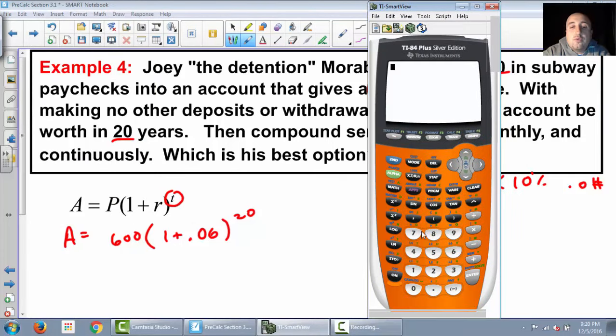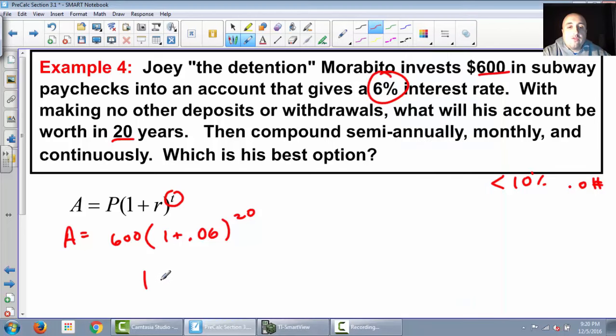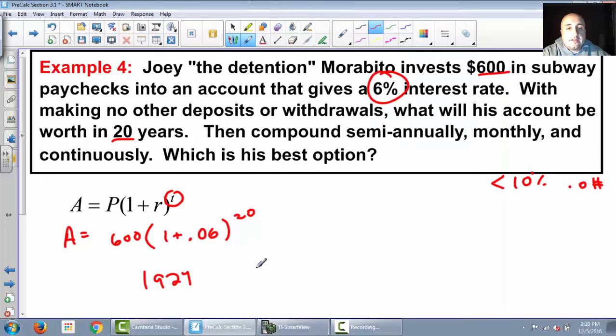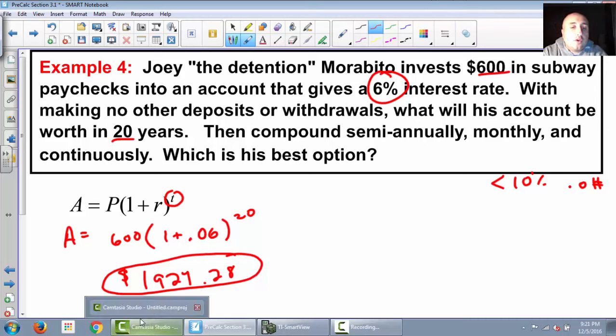So let's do this on the calculator. Remember, please excuse my dear aunt Sally. We need to do the parentheses first. So 1 plus 0.06, and then I'm going to raise it to 20. And then we're going to multiply that by 600. And in 20 years, with no compounding, just regular interest, he will have $1,924.28. Remember, money can only go to two decimal places. Not a huge amount of money after 20 years, but it is more money than you started with. And just remember that this means he's not doing any other deposits or withdrawals. This is just investing 600, getting 6% interest for 20 years. He'll have $1,924.28.